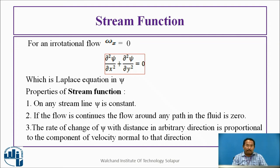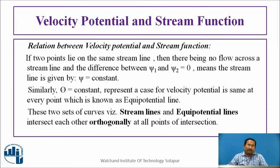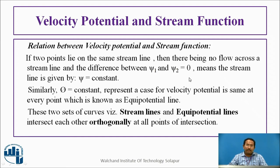What is the relation between velocity potential and stream function? If two points lie on the same stream line, there will be no flow across the stream line, and the difference between ψ₁ and ψ₂ is zero — meaning stream lines give ψ equal to constant. Similarly, phi equal to constant represents the equipotential line. These two sets of curves — stream lines and equipotential lines — intersect each other orthogonally at all points of intersection, giving a product of slopes equal to minus one.